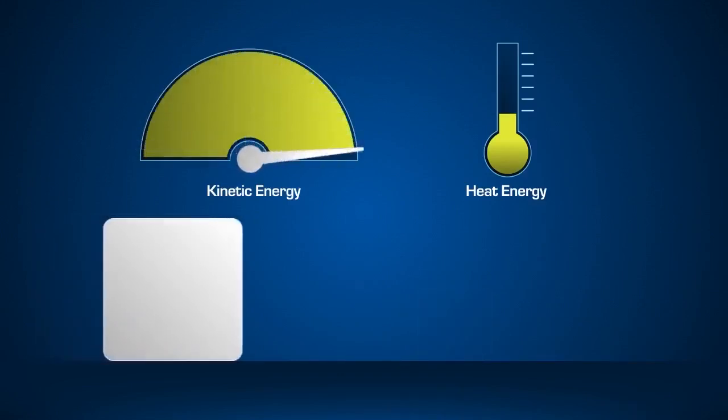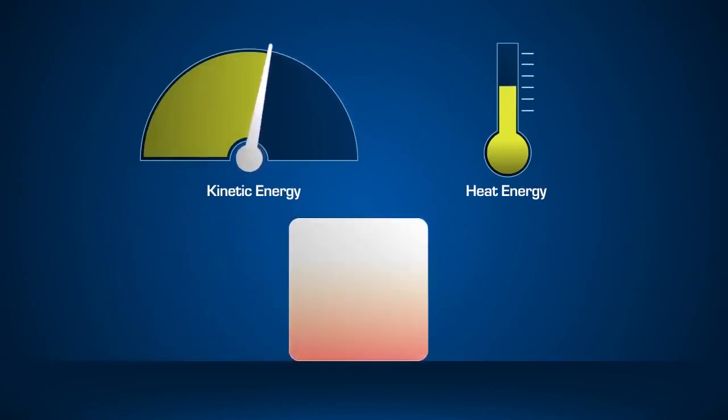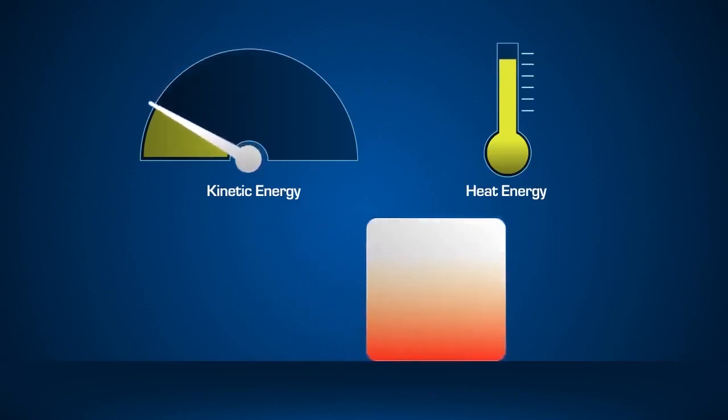A heavier or faster moving block possesses more kinetic energy. This means that more kinetic energy is converted to heat as friction slows the object.